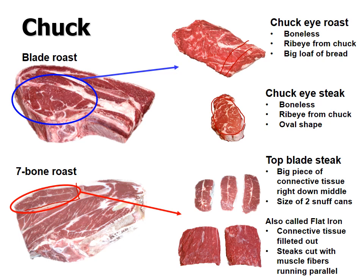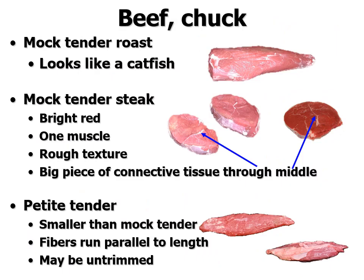Within the seven-bone roast is a special muscle called the infraspinatus, sitting within the spine of the scapula. They can cut it out to create top blade steaks, which have a big hunk of connective tissue running down the middle. Or they can fillet out that connective tissue and cut it crossways to create flat iron steaks. You can sometimes see little pieces of connective tissue still there, and the fibers run parallel with the length of the steak.